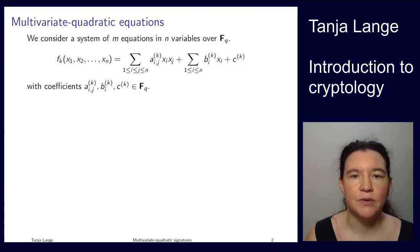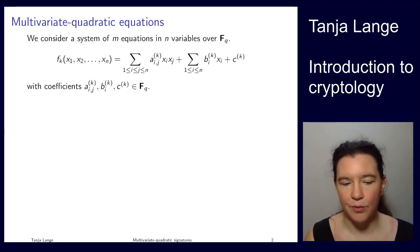And so the typical situation is that we have n variables and m equations. And for the signature schemes which we'll be looking at, the number of equations is less than the number of variables.